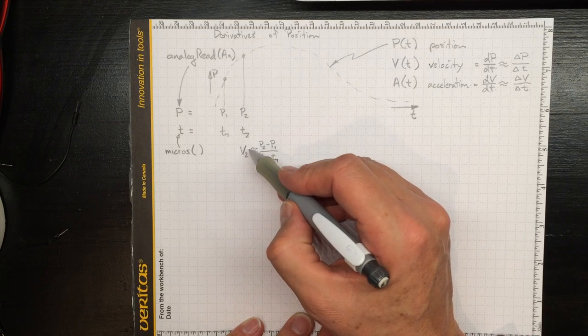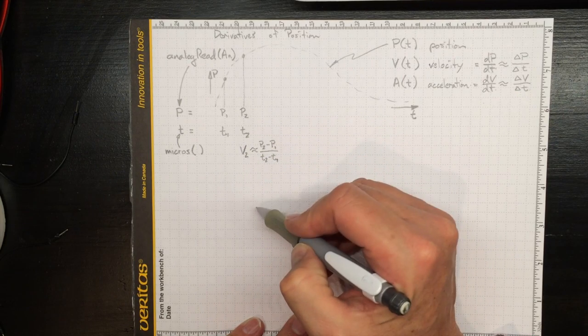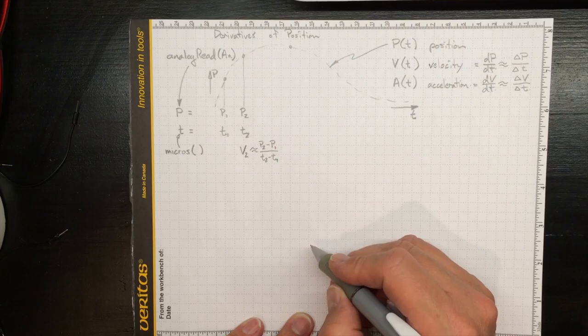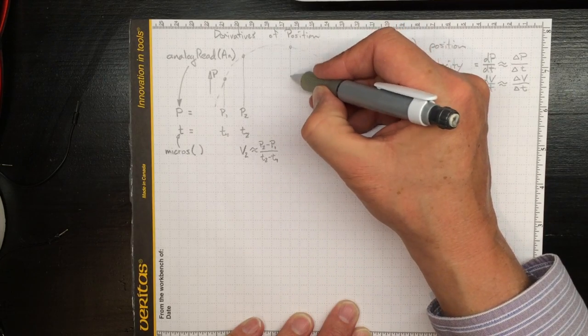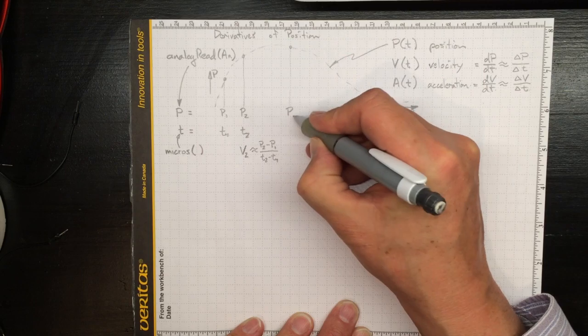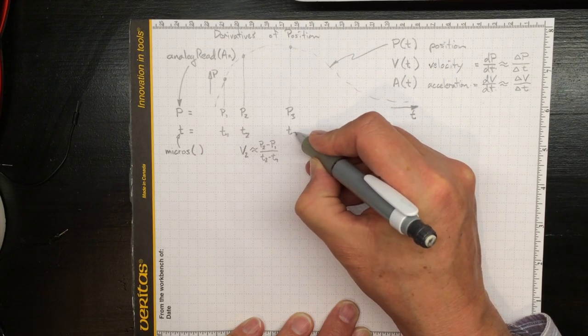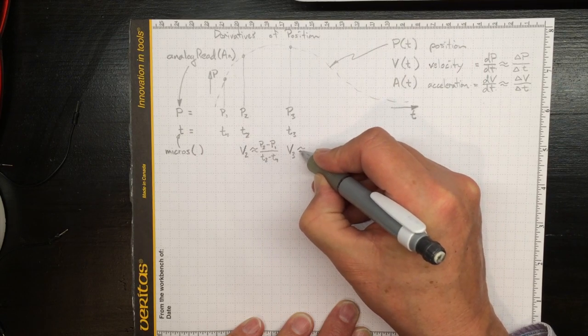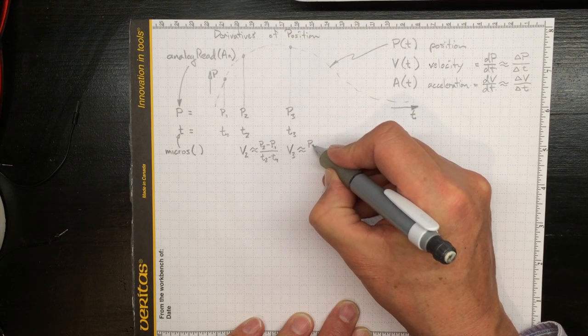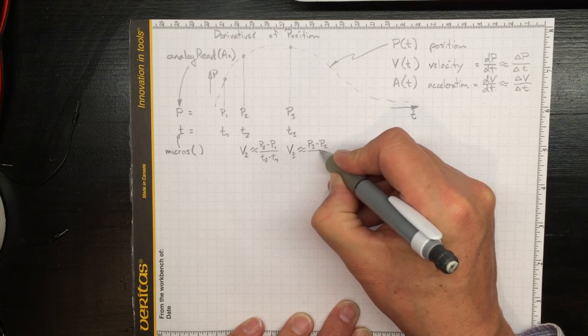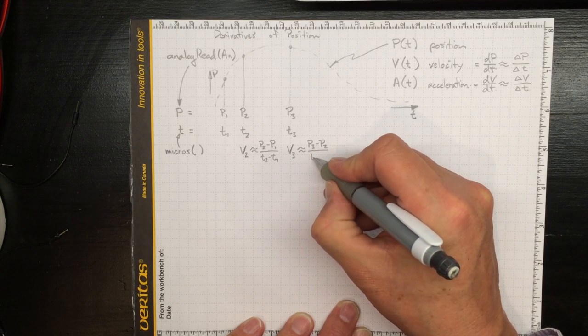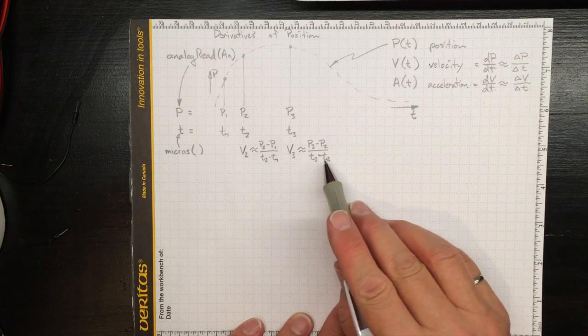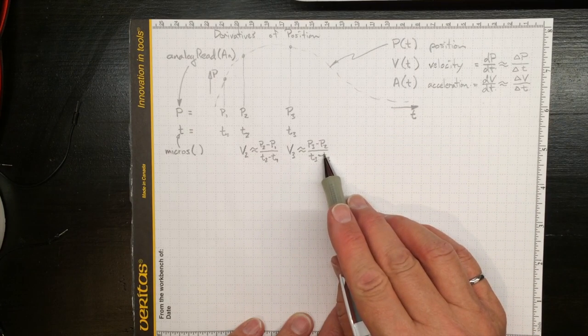So we now know the position and we've got an estimate of what the velocity is. So if we go on and take another position measurement, then we've got p3, and we know what time we took that, t3. We can estimate v3 as approximately equal to p3 minus p2, divided by t3 minus t2, and that will give us a reasonable estimate of what the velocity was at that time.